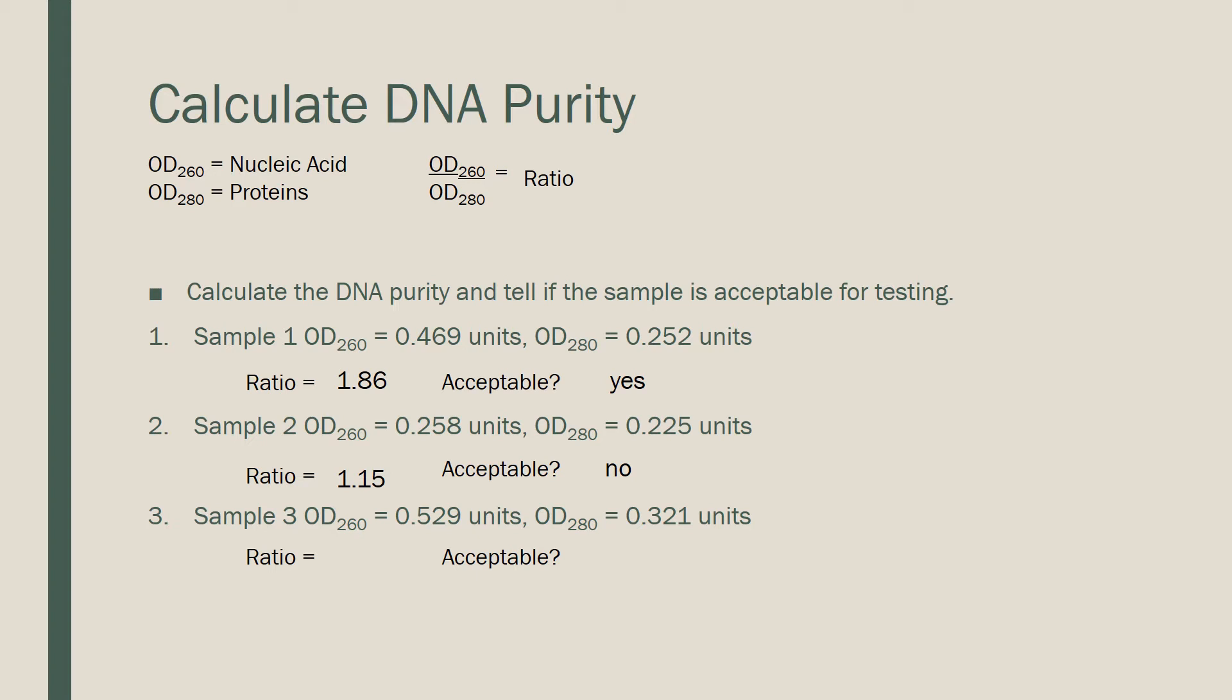In example 3, our sample gave us an OD260 of 0.529 and an OD280 of 0.321. The ratio for this sample is 1.65. Remember that middle range between 1.6 and 1.8, those are acceptable for some testing but not all. This specimen is acceptable for some tests, like PCR, but not for something like DNA sequencing.